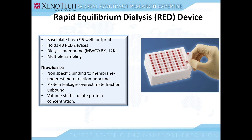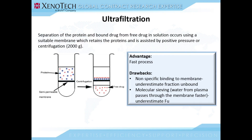Another drawback is if you incubate your samples for prolonged periods, volume shifts may occur from the buffer side to the donor side, hence diluting your protein concentrations. The second method is ultrafiltration. This follows the same basic principle as the RED device — that is, the sample and the buffer are separated by a membrane — but in this case it is assisted by positive pressure or centrifugation. Hence this step is faster than the RED device. The drawbacks again are the presence of the membrane could cause non-specific binding, and the other drawback is molecular sieving — water from the sample passes through the membrane faster, hence underestimating the fraction unbound.